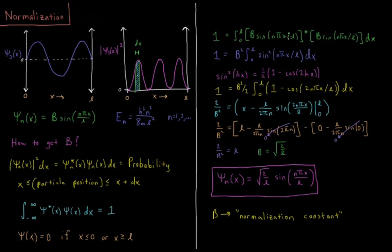So there is no i here, there's no square root of minus 1 anywhere, so the complex conjugate is just equal to the wave function. So this thing here is just equal to the wave function squared. So we can factor out the constant b. There's two of them, so it's b squared. 1 equals b squared integral 0 to L sine squared n pi x over L dx.